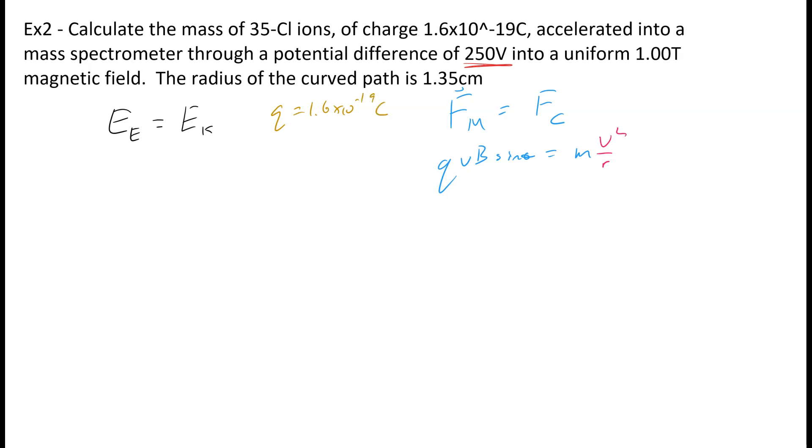Now some of you are noticing that this charge is a charge of one electron. So how on earth does a chlorine ion, which is huge, have the same charge as one electron? Well, think about the structure of the atom for a moment.